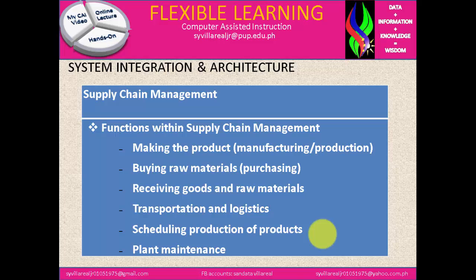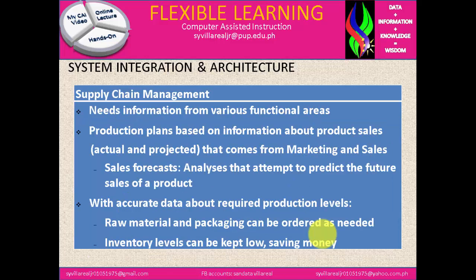Now let's go to supply chain management. Functions of supply chain management include: making the product — manufacture and production; buying raw materials — purchasing; receiving goods and raw materials; transportation and logistics; scheduling production of products; and plant maintenance. SCM needs information from various functional areas. Production plans are based on information about product sales — actual and projected — that comes from marketing and sales. Sales forecast analysis attempts to predict the future sales of a product.